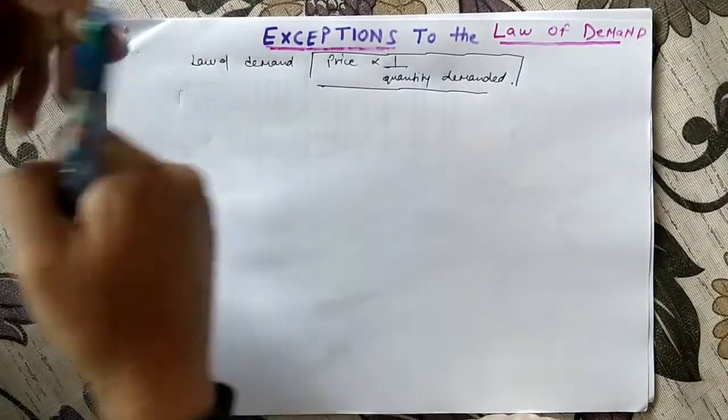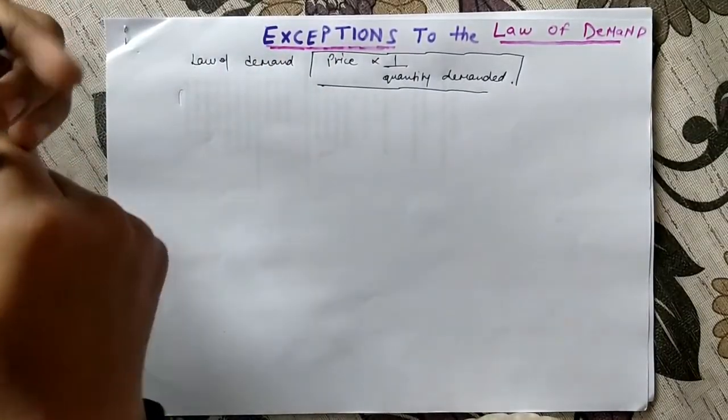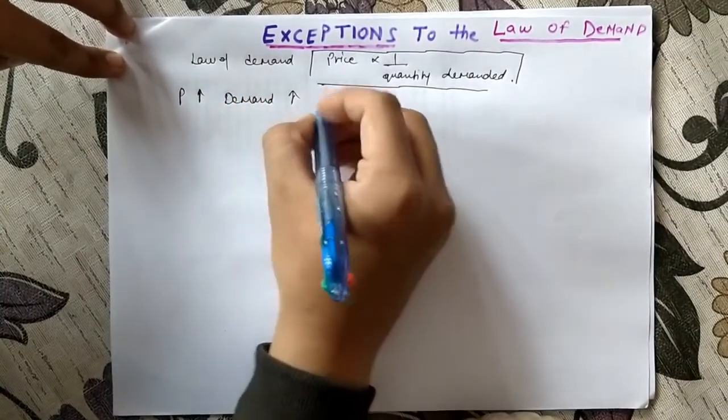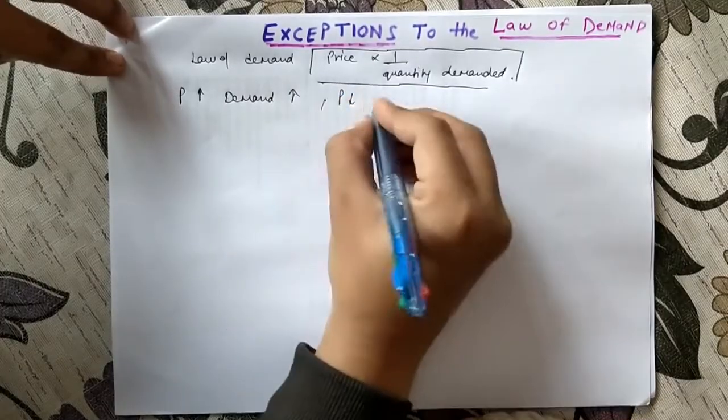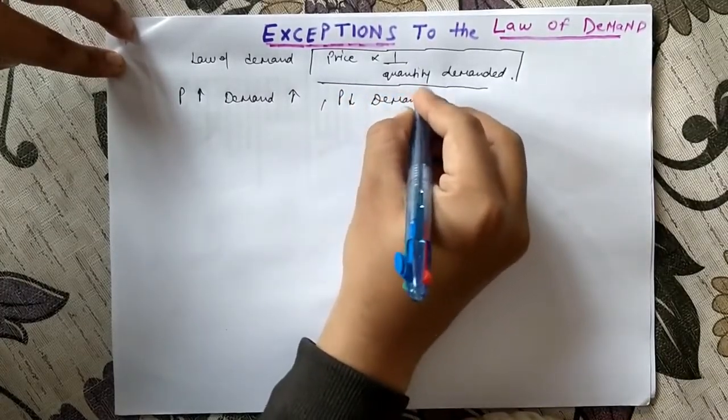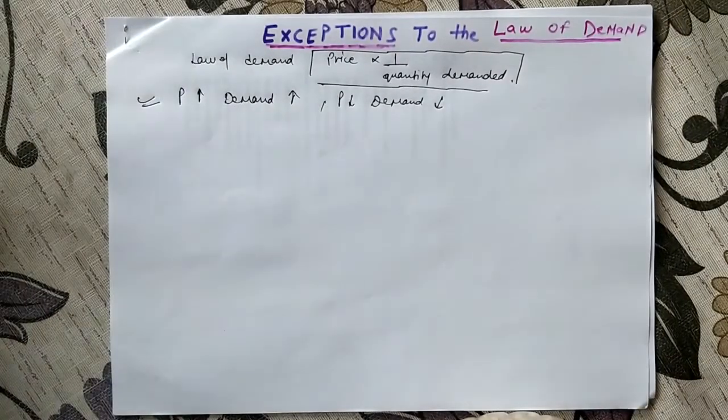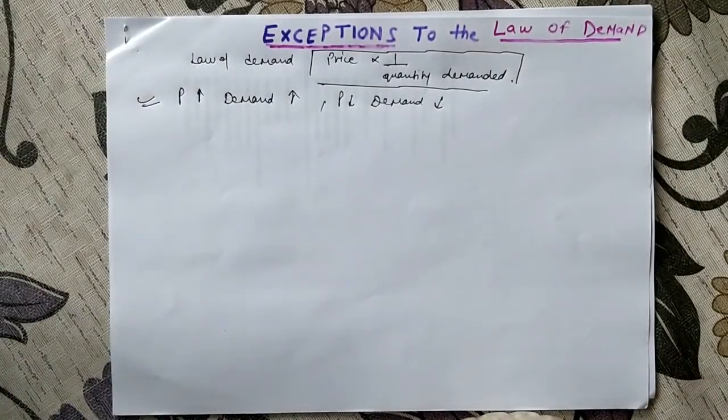So if the price increases, then the demand also increases, and when the price decreases, the demand also decreases. This is what we call the exceptions to the law of demand. Now there are some exceptions we will discuss them one by one.